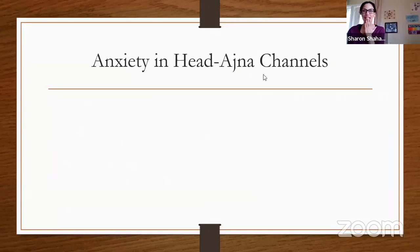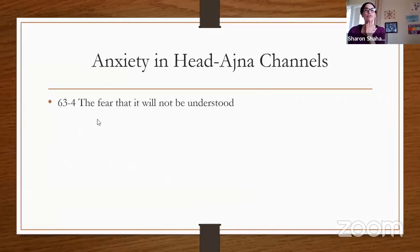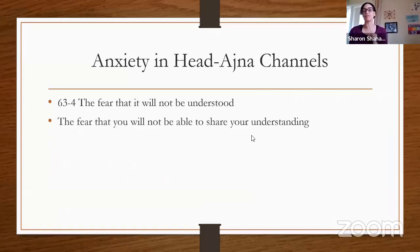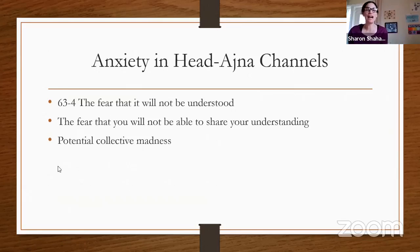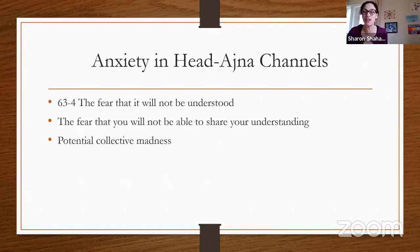There is anxiety in the head and ajna channels. In the 63-4, the anxiety is that it will not be understood — the person fears they will not be able to share their understanding. Ra talks about the 63 and 64 as places where we have potential collective madness.